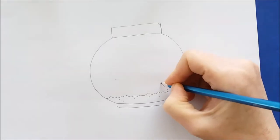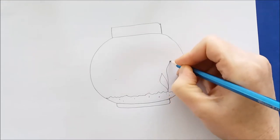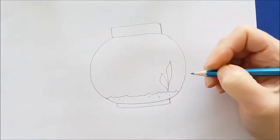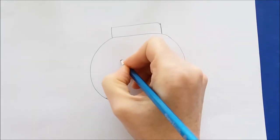And I'm going to add some sea plants. So I'm just drawing some ovals with points on them. And I'm going to do the same thing on the other side.